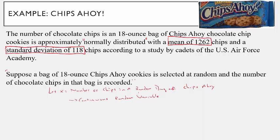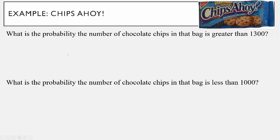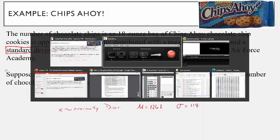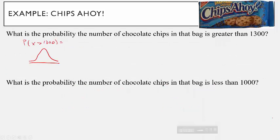I've got this random variable and I'm going to ask some probability questions. First: what is the probability the number of chocolate chips in the bag is greater than 1,300? I want to find P(X > 1,300). We draw the normal curve, which we know is normally distributed with mean 1,262 and standard deviation 118. The curve should be centered at 1,262, and we want the area to the right of 1,300.